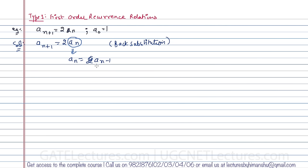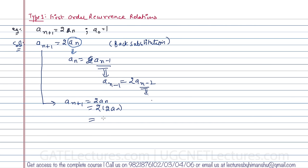Now, to find a(n-1), substitute again in the original equation: a(n-1) = 2·a(n-2). Continuing this process, the equation expands as: a(n+1) = 2·a(n) = 2·(2·a(n-1)) = 2·(2·(2·a(n-2))) = 2·2·2·2·a(n-3), and so on.